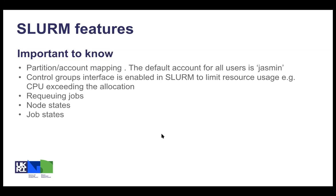Another feature enabled during this transition is the control group interface, which limits resource usage per job. If a job has an allocation of resources — for example, CPU — and at runtime it starts to exceed that allocation, it will be completely constrained to that allocation and won't consume other CPUs on the same host. However, it will start running slowly and may be killed at the end.